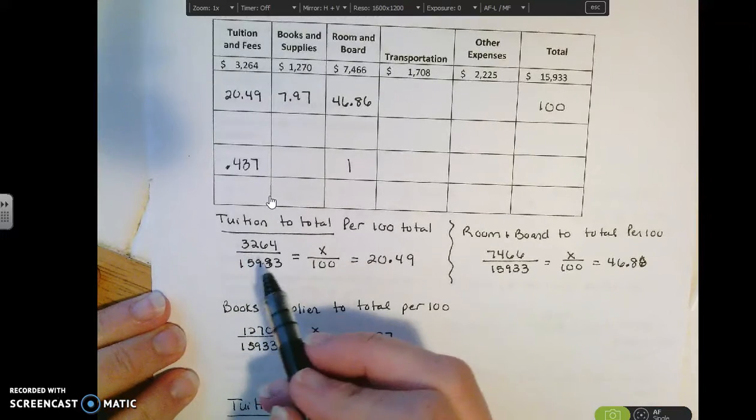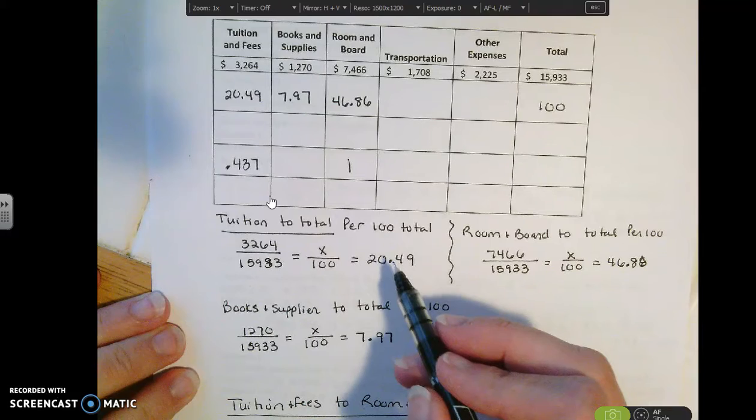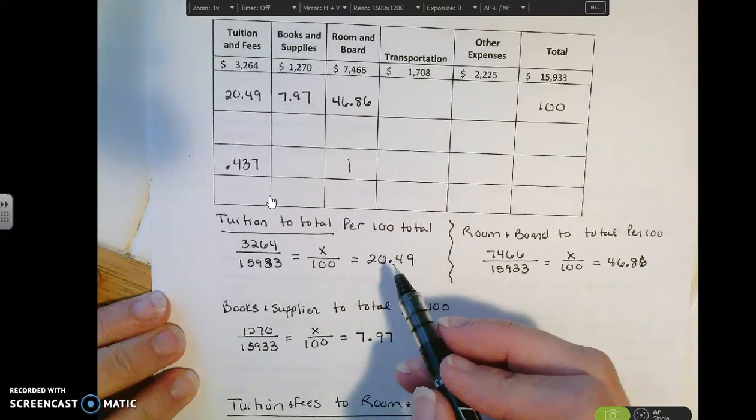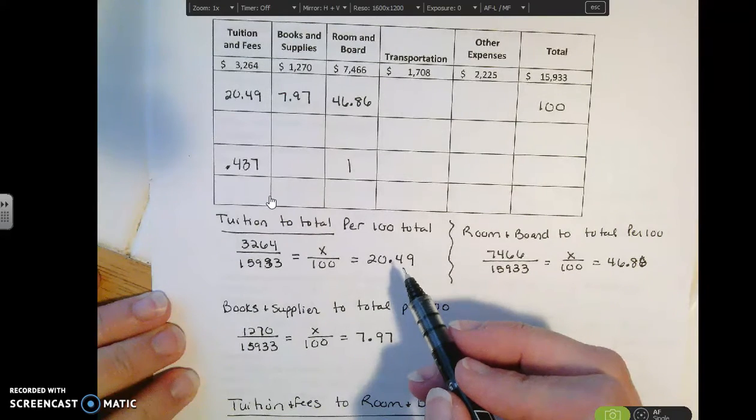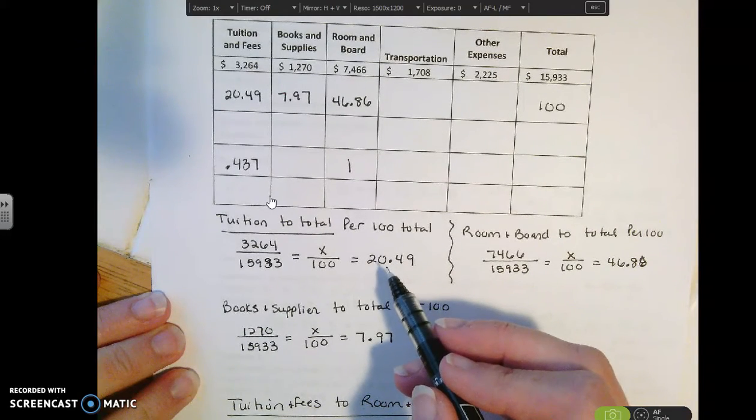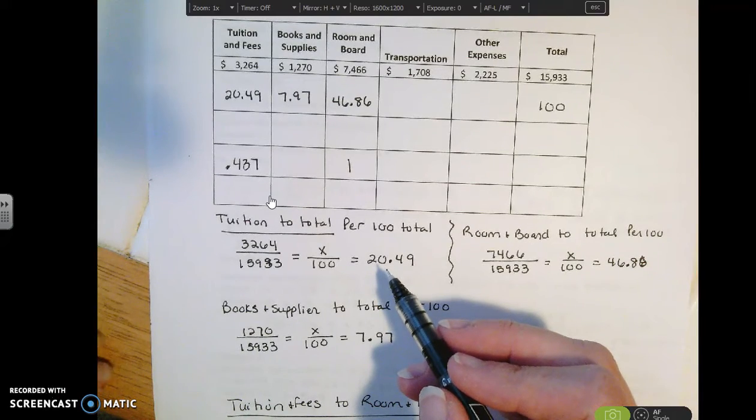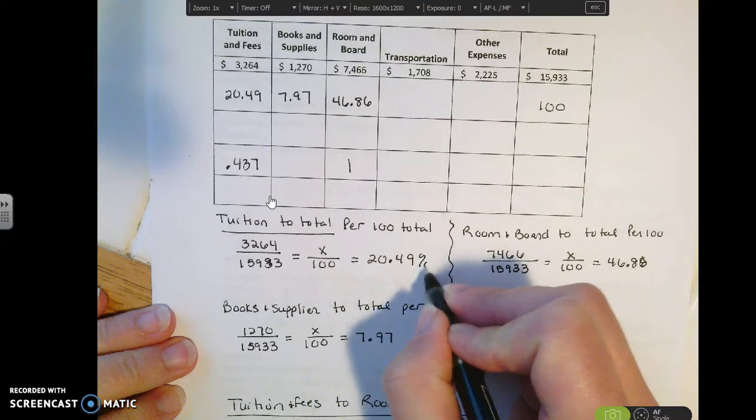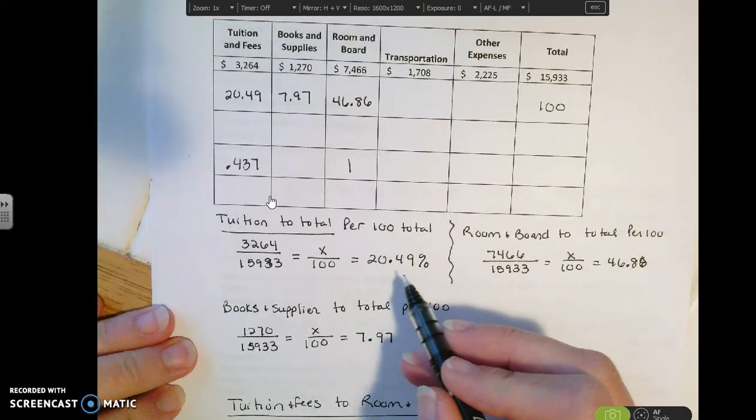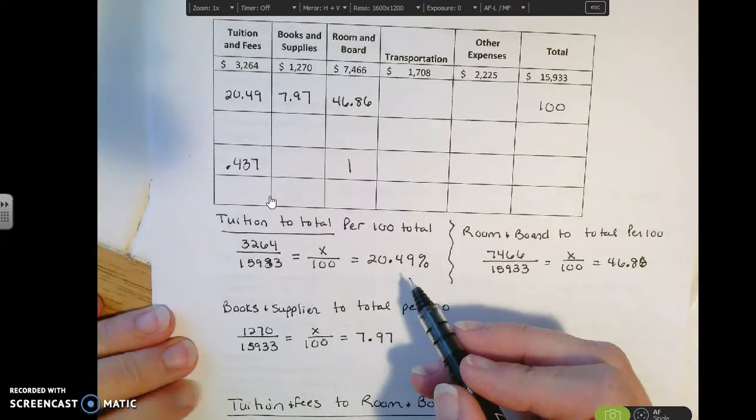So if I cross multiply, if I do my cross product on this problem, I'll end up finding out that the tuition is about 20.49 per 100 total. So basically for every $100 spent, I'm spending $20 of that on tuition. So this is thought of as a percent. So basically my tuition is 20% or 20.5% of my total expenses.